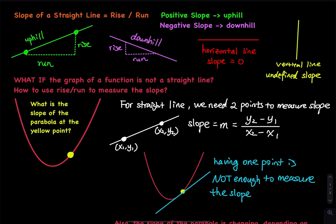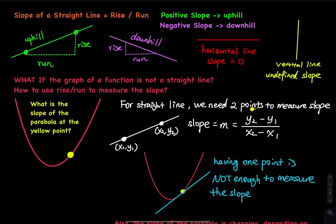We have a parabola and a yellow point. The first thing we can do is draw a straight line. Do you see this blue straight line? This blue straight line is touching the yellow point. But can you use just one point to calculate the slope? We used to do y2 minus y1 divided by x2 minus x1. If you have one point only, the answer is no. This formula requires four coordinates — four numbers. If you only have one point, you only have two numbers, so you are still looking for another point. However, if you draw a blue line touching the curve exactly one time, the maximum you can find is one point. So having one point is not enough to measure the slope. To measure the slope using the straight line method, we need another point.